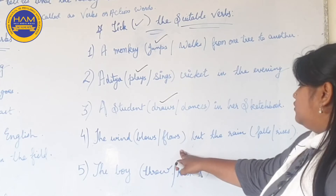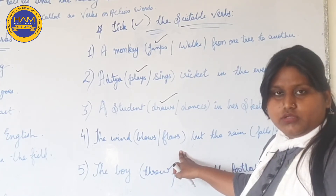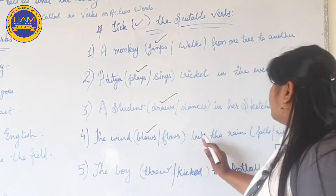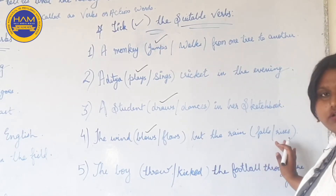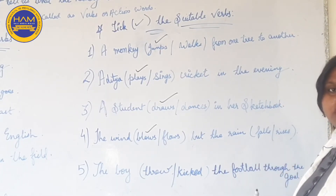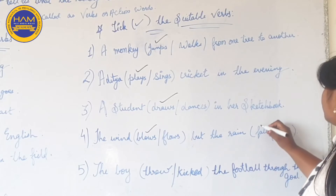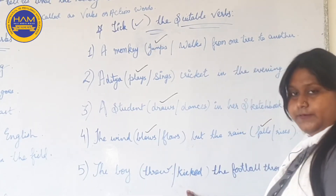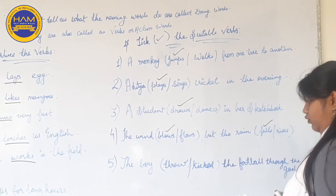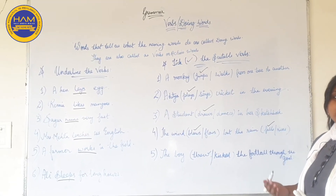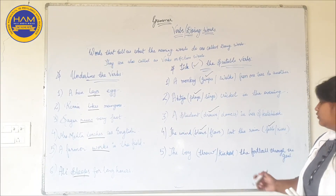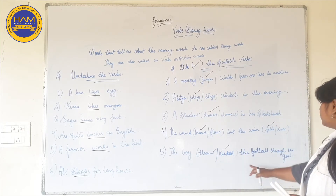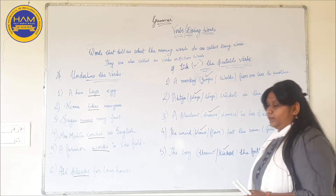The wind blows or flows? What does the wind do? The wind blows. The rain falls or rises? The rain falls, so 'falls' will be the suitable verb. The boy threw or kicked the football into the goal. What do we do with a football? We kick it, so 'kicked' will be the suitable verb here.